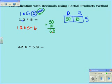We're going to follow the same process when we're working on the second problem, which is just a problem with larger numbers: 42.6 times 3.9.